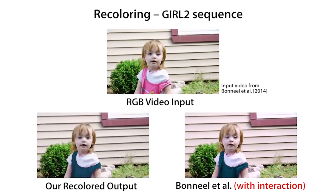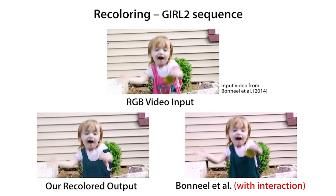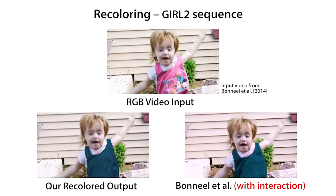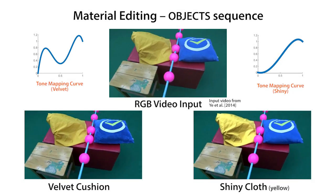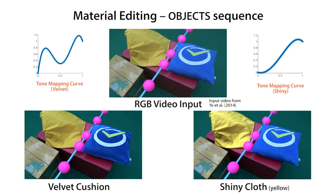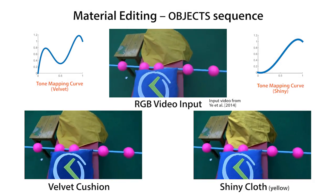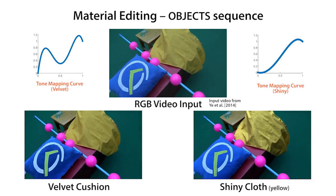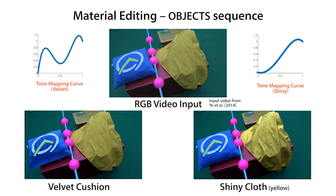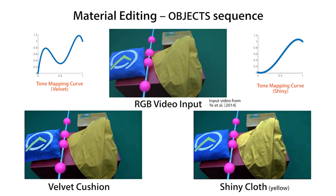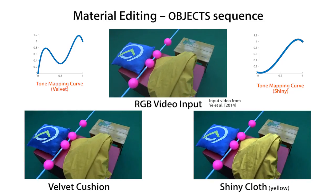Such artifacts can be fixed by user interaction in offline scenarios but still remain a challenge for live video streams. By tone mapping the shading layer, material editing effects can be achieved on objects. On the left, we modify the cushion to look like velvet and on the right, we make the yellow cloth look shiny. Note that the rest of the scene remains the same.